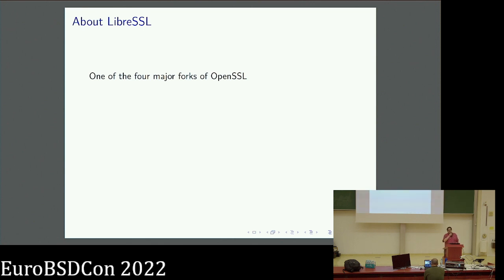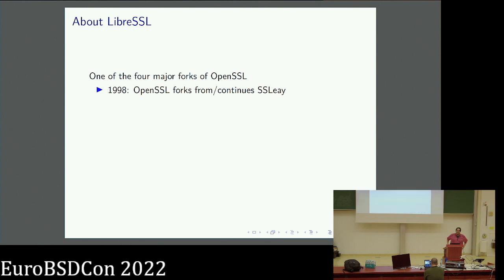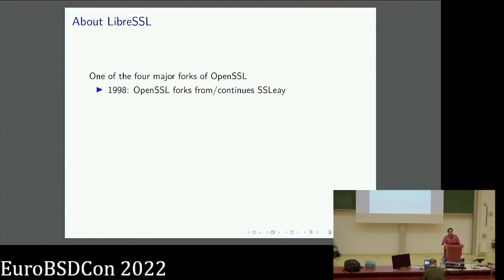I assume that everybody knows a little bit what LibreSSL is. I'd like to define it as one of the four major forks of OpenSSL. The first fork is OpenSSL itself, which started in 1998 as a fork of SSL-EAY. SSL-EAY came out of Netscape and was the initial implementation of SSL v2 — SSL v1 being so broken it was never published. The author, Eric A. Young, was absorbed into the RSA corporation when crypto restrictions were more or less lifted, and other people had to take over OpenSSL, replacing SSL-EAY, and the latter died.